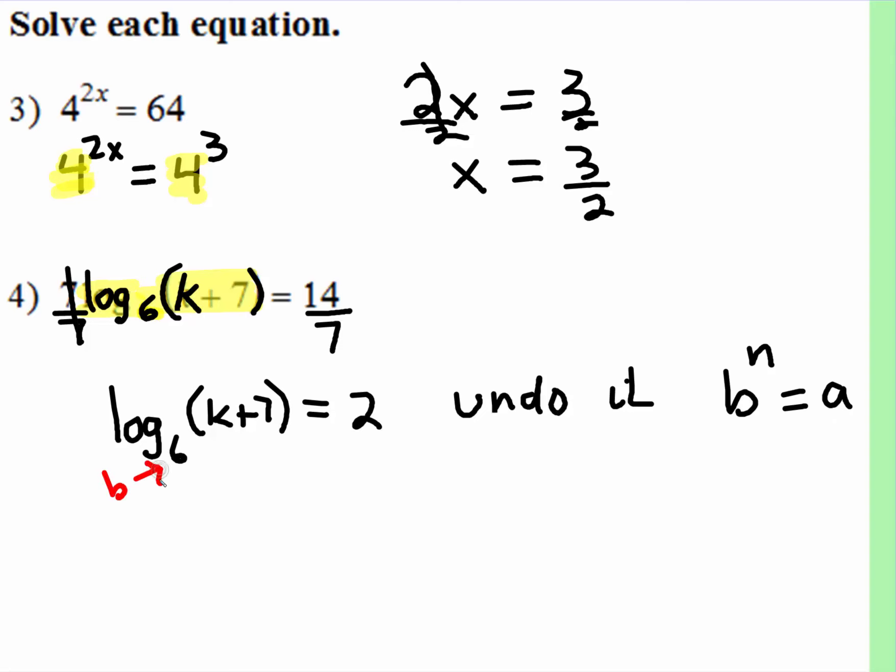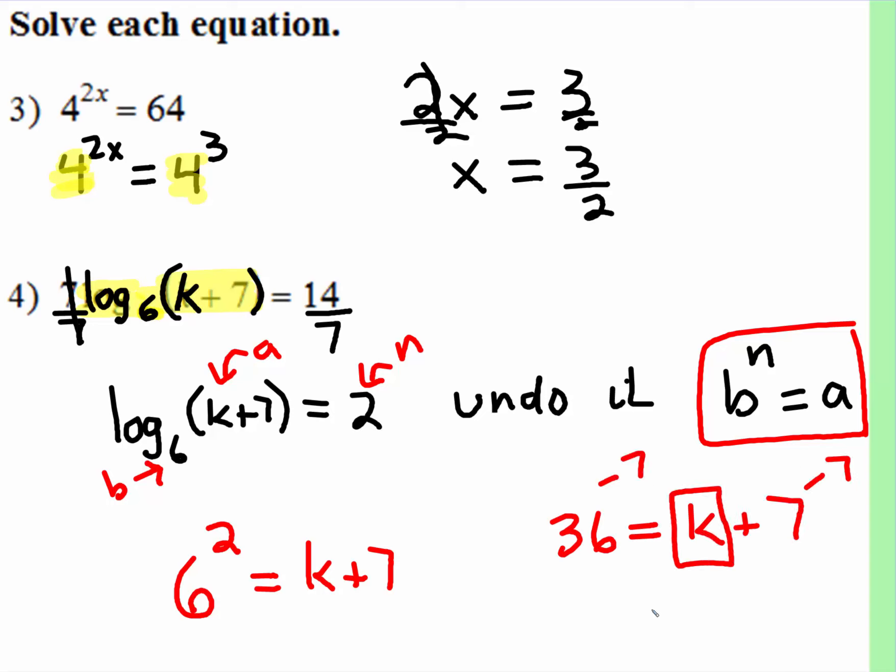Remember, our base number is 6. Our a value is this whole thing. And our n, or our exponent, is 2. We're going to have to use an exponential form. So here's our base. Here's our exponent. Our base is the number 6. Our exponent is the number 2. And our value is k plus 7. Well, we can write 6 squared as 36 is equal to k plus 7. And to get the k by itself, we would just subtract 7. So we would find that 29 is equal to k. All right. Let's keep going.